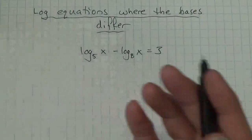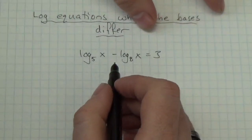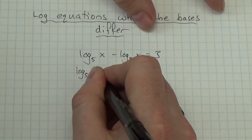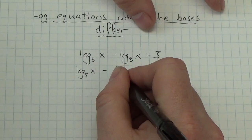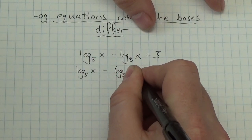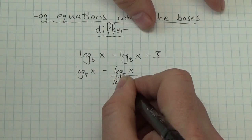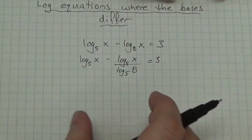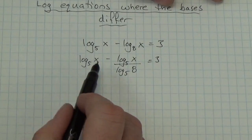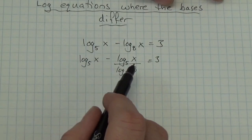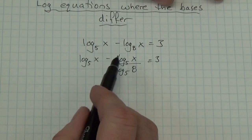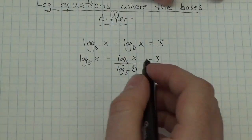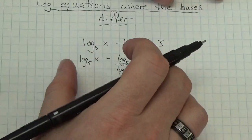or log base e, but let's be a little bit lazier — let's change both of these to log base 5. I'm not going to do anything with the first one since it is already log base 5. But over here, this would become log base 5 of x divided by log base 5 of 8. That's how the change of base formula works. Now that log base 5 of x is also a factor here — it's being divided by log base 5 of 8.